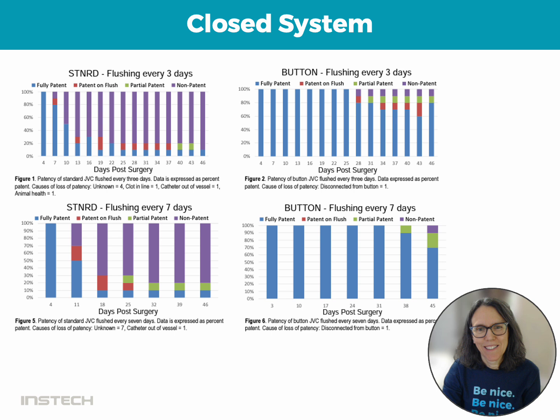Flushing every 7 days shows pretty much the same scenario. At day 11, there's 50% that work and 50% already with some issues — either non-patent or patent on flush. But looking at the button at day 31, they're all still working — fully patent at day 31. And at the end of the study, again, pretty much a complete opposite. So we can see that using a VAB really does increase patency duration.